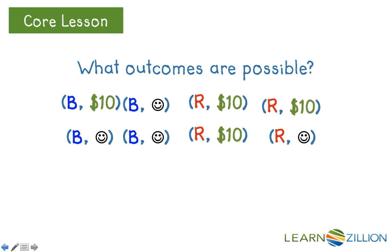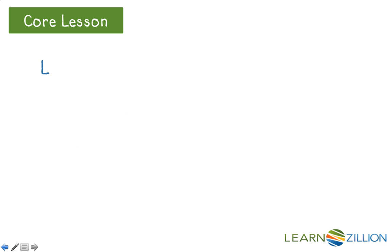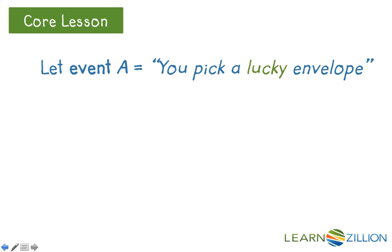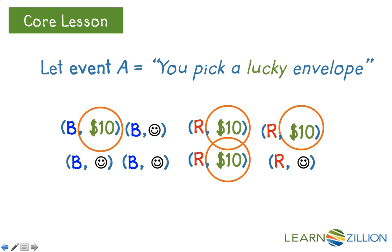What outcomes are possible? Here we see all possible outcomes as an organized list. If we put curved brackets around this organized list, we call this set the sample space. The count of outcomes in the sample space is 8. Now let's define event A as picking a lucky envelope. We can see that there are 4 outcomes in event A, so event A is a subset of the sample space with 4 outcomes.